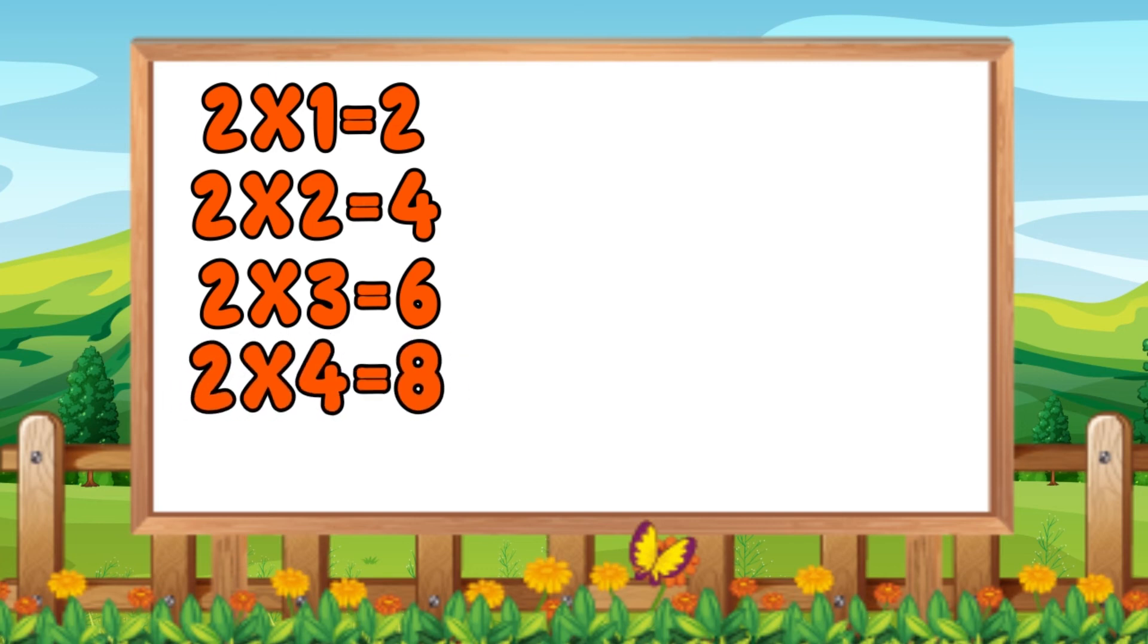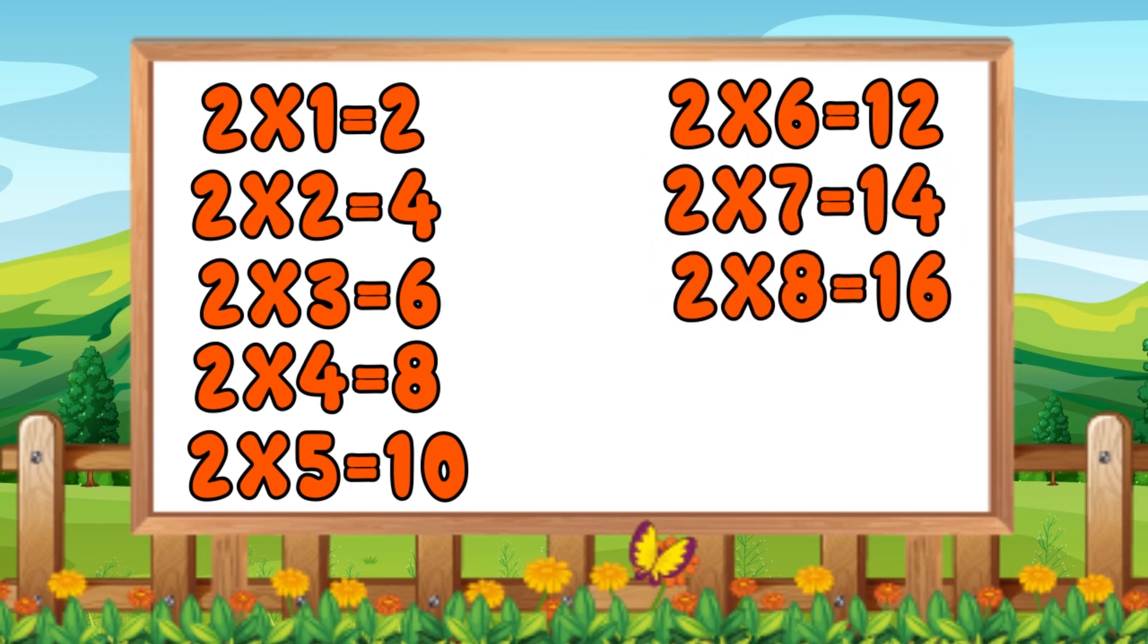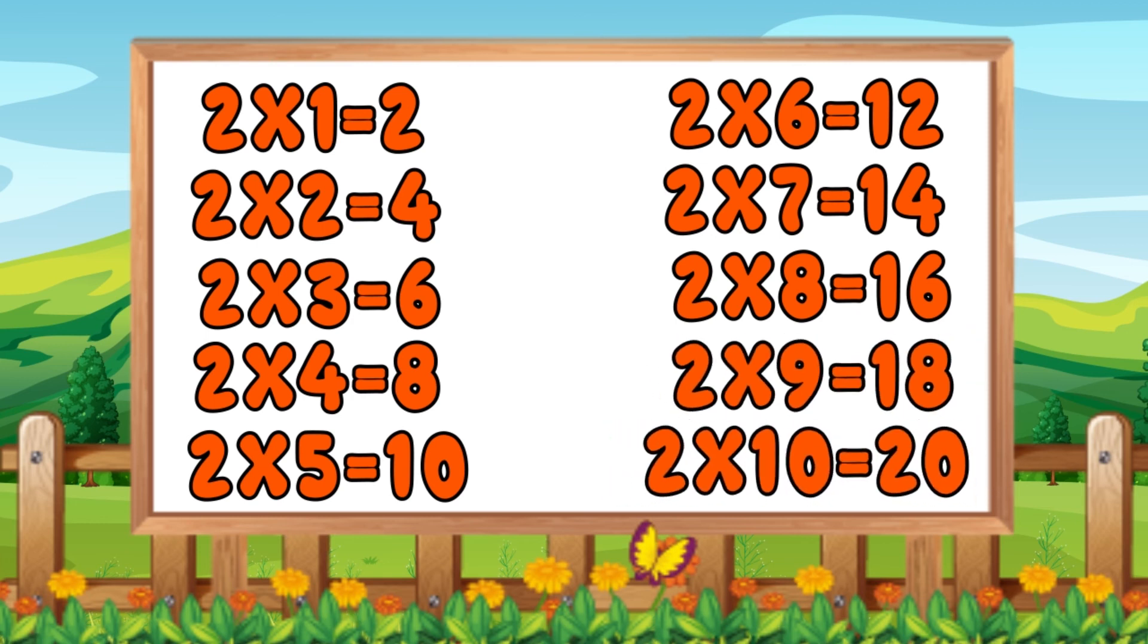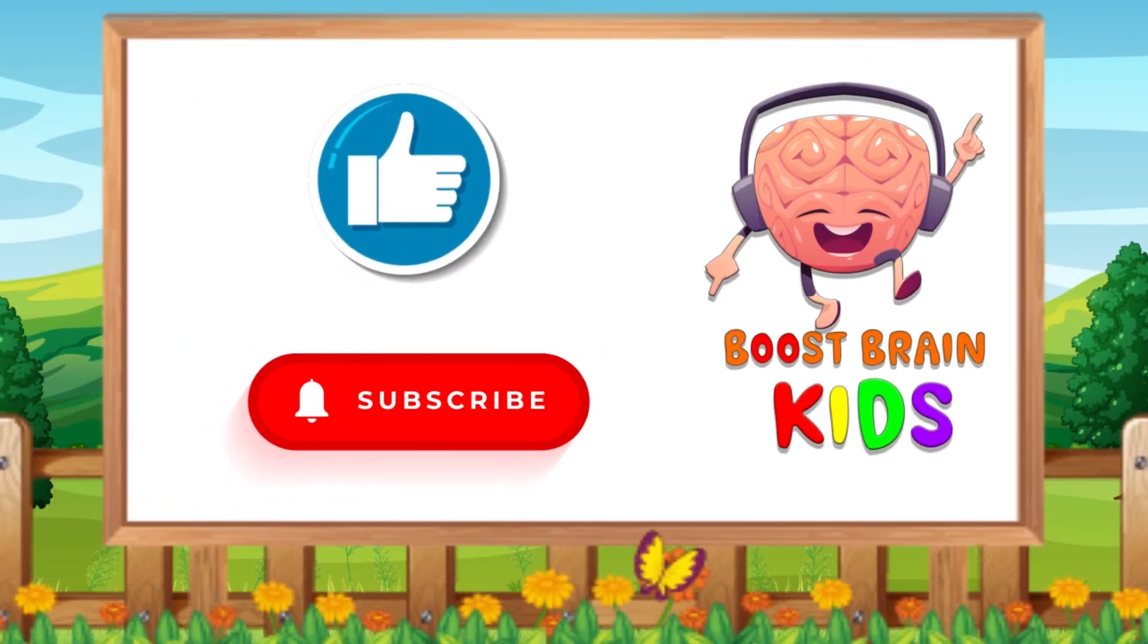Two fours are eight, two fives are ten, two sixes are twelve, two sevens are fourteen, two eights are sixteen, two nines are eighteen, two tens are twenty. Do subscribe for more fun videos.